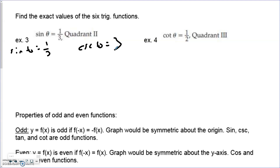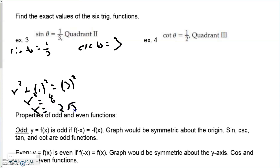We use the Pythagorean theorem: x² + y² = r². Substituting and simplifying, we get x² = 8, so x = 2√2. The crucial component is knowing we're in quadrant 2. That means the x value must be negative, since x values are negative in quadrant 2. The plus-or-minus from the square root is resolved by the quadrant — so x = negative 2√2.